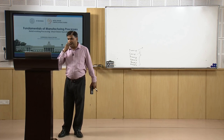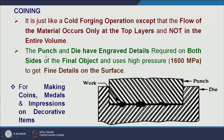In coining, there is a punch and die having the desired details — letters and figures engraved in both. Using very high pressure, the application onto the sheet metal leads to plastic flow at the top layers, producing the desired finer details on the surface. It is basically used for making coins, medals, and impressions of decorative items.